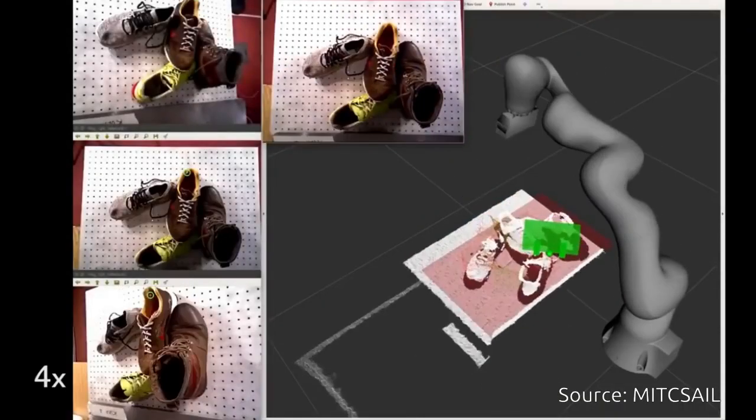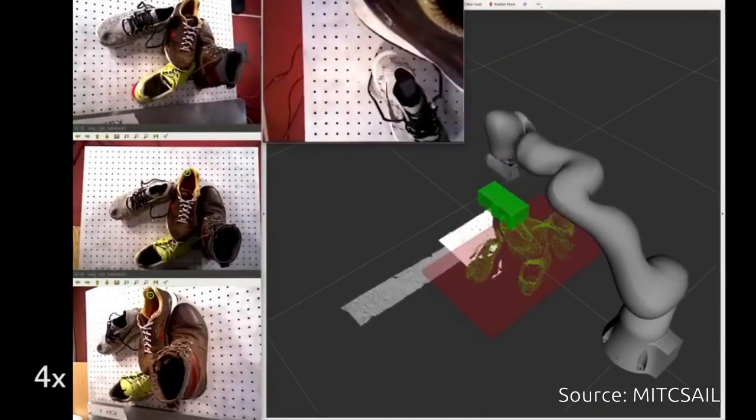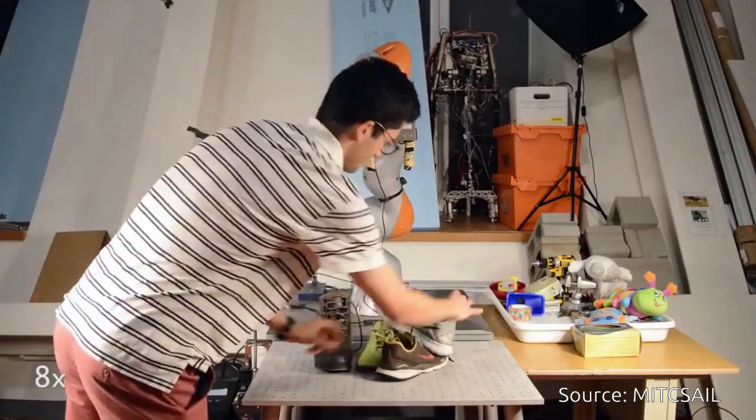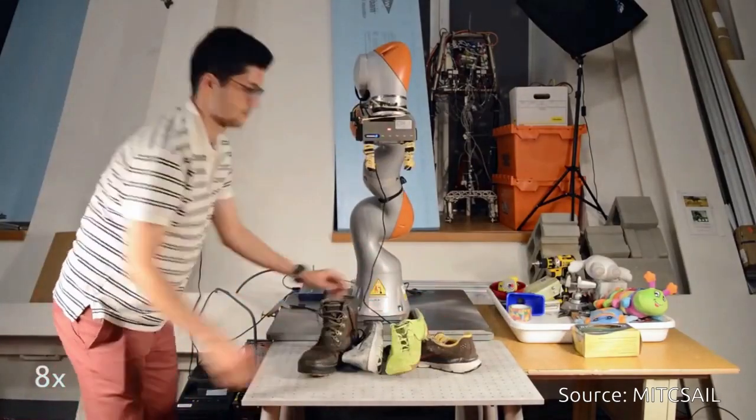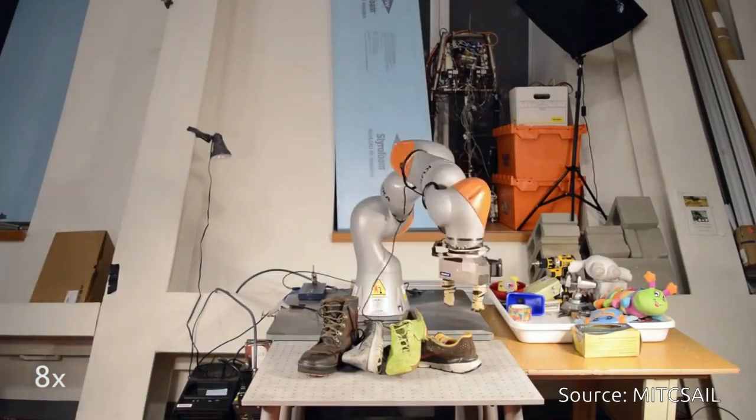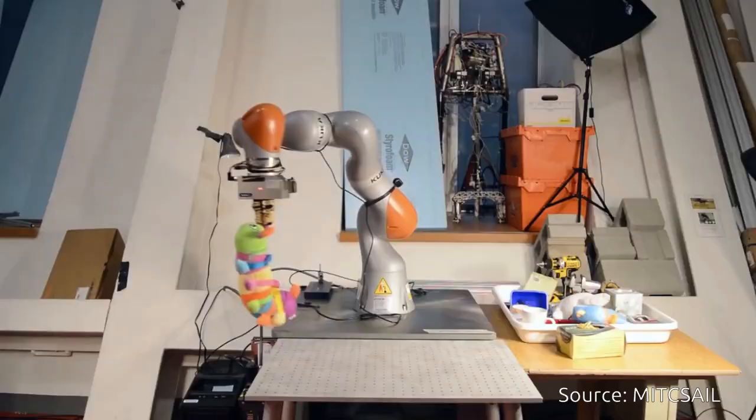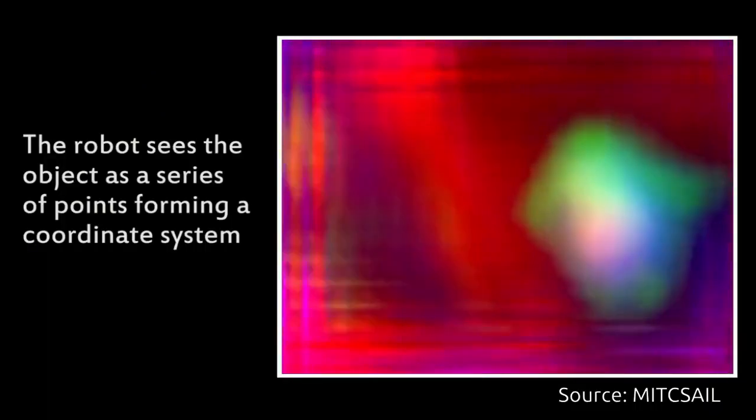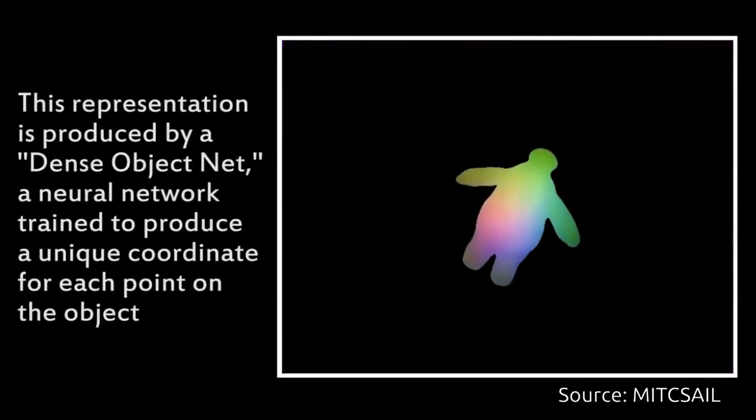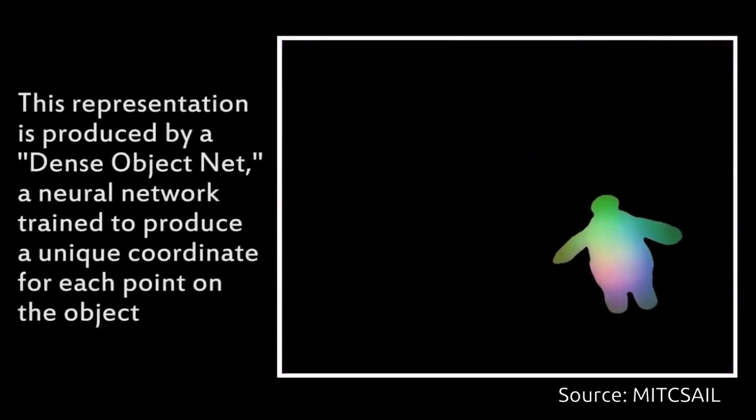The team trained the system to look at objects as a series of points that make up a larger coordinate system. It can then map different points together to visualize an object's 3D shape, similar to how panoramic photos are stitched together from multiple photos.